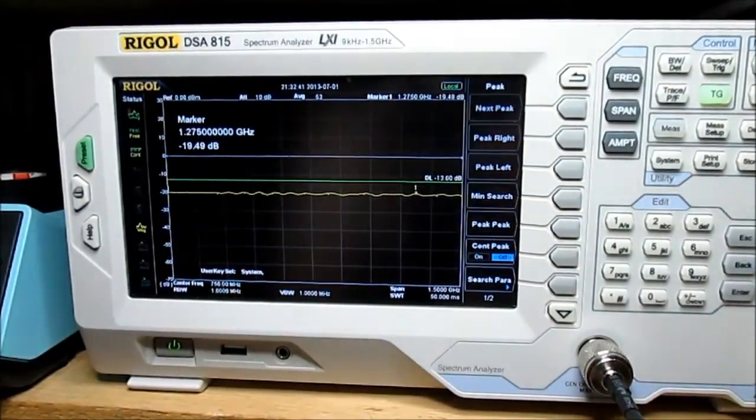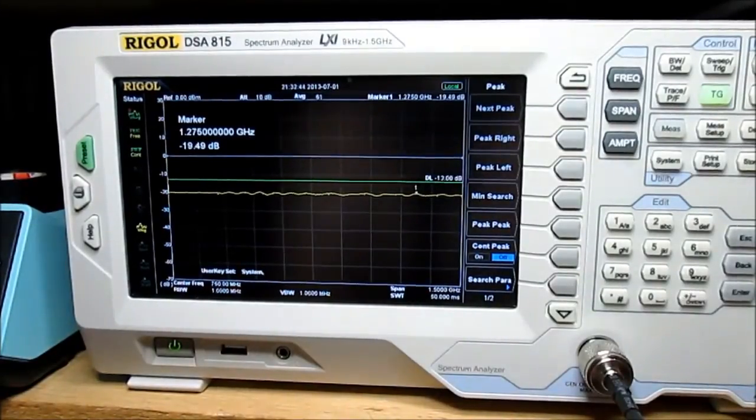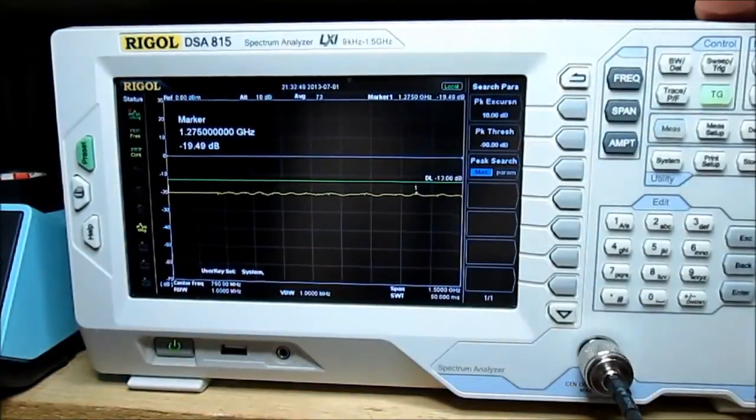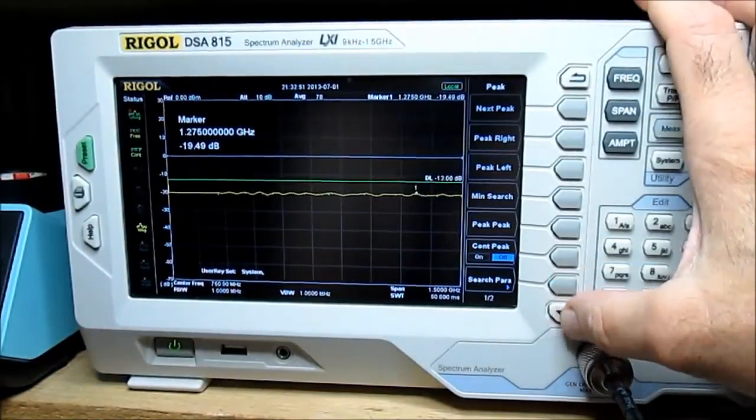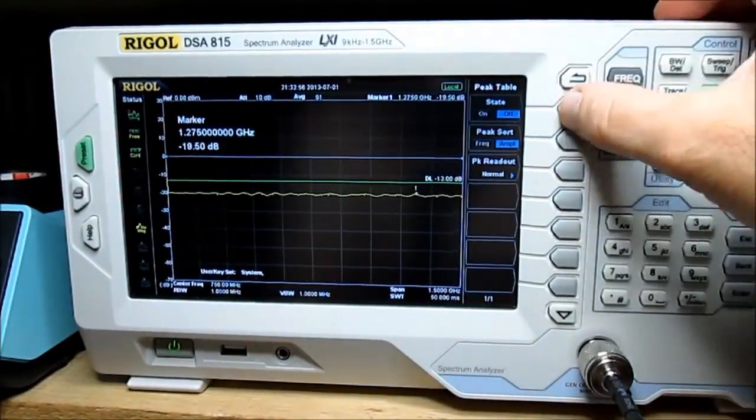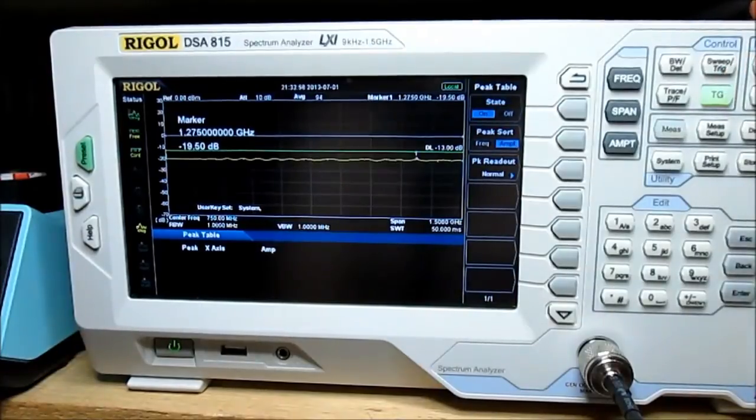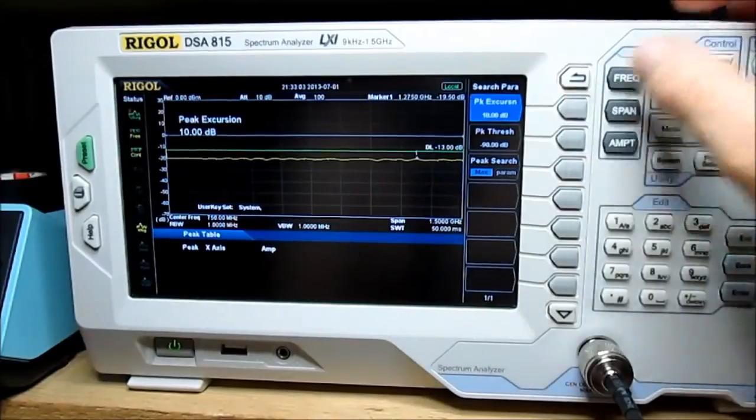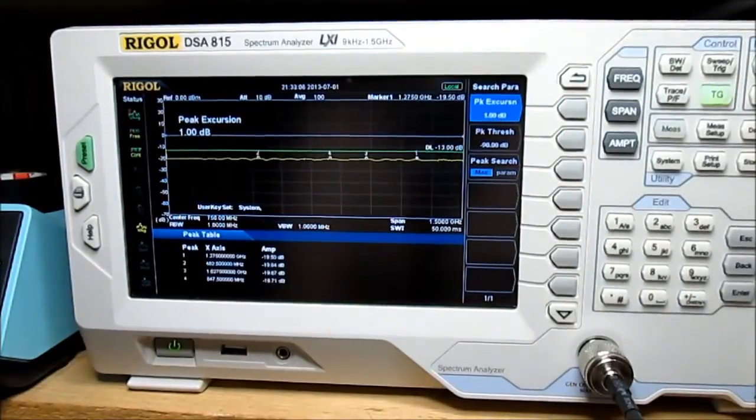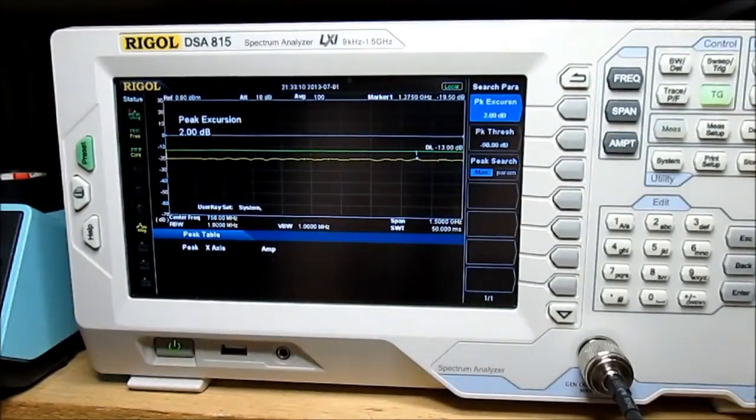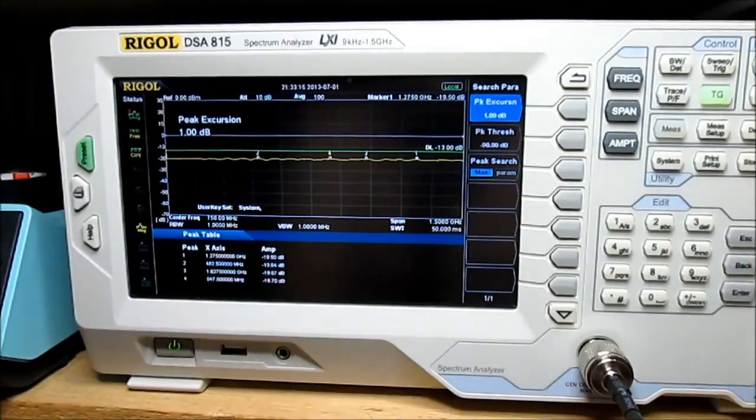But let me turn on a peak and see, search parameters. Well let's not do the threshold yet, let's go back to peak. And go down one, turn on the peak table, peak check, do it on amplitude. Turn it on. And then go back to peak, to search parameters, excursion, and lower this down.